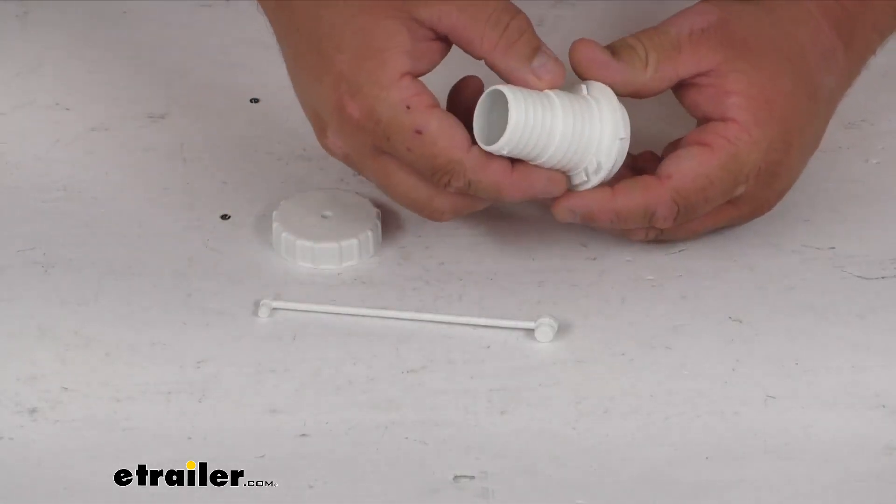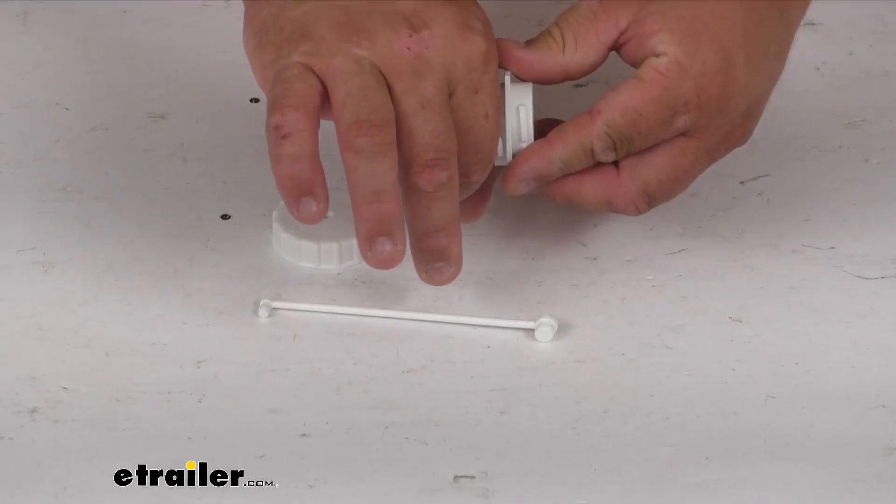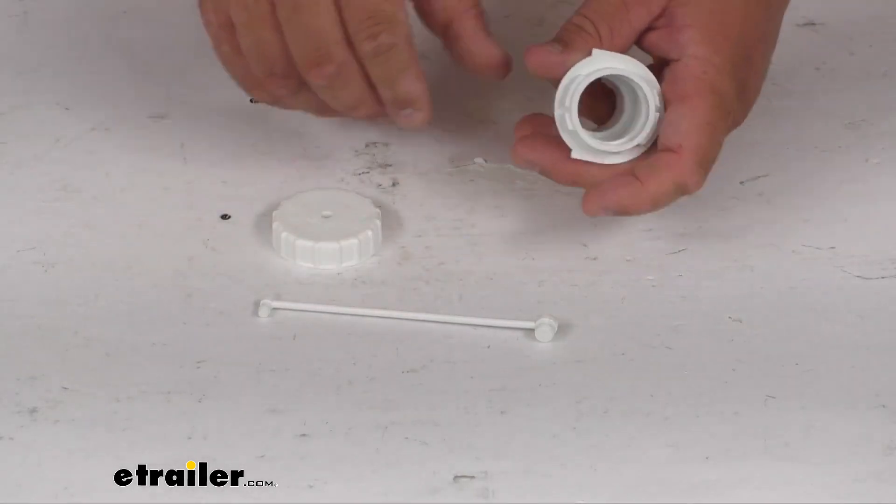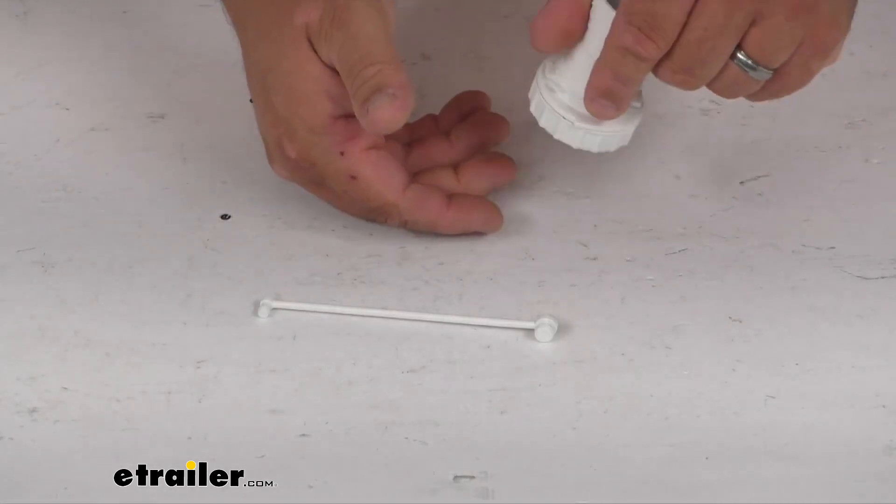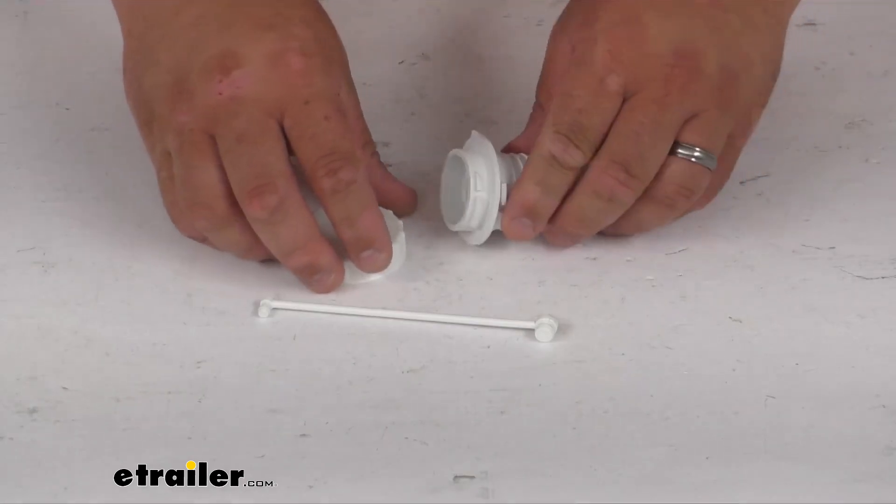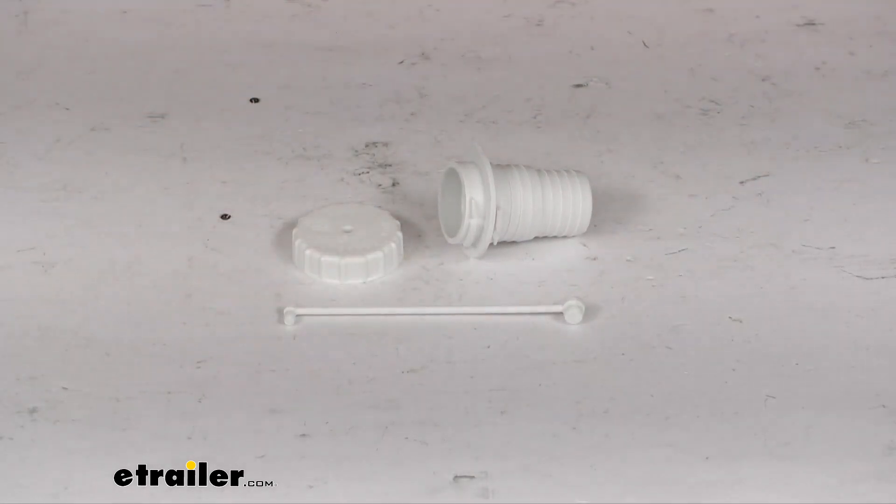You push it into the hole, line up those flanges, twist it, and it'll lock in place. And then these cutouts here match up to the cap to keep the cap on. So a pretty simple replacement part, easy to do. You'll have no problems doing it yourself.